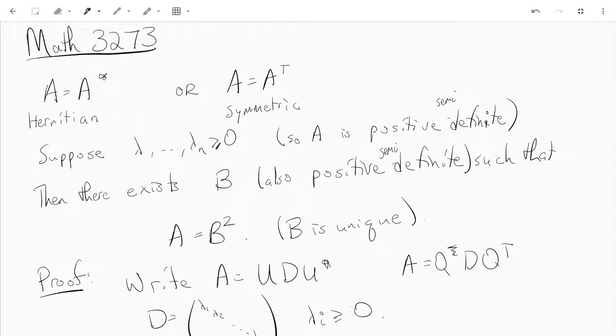So here we have a Hermitian matrix if it has complex entries, or a symmetric matrix if it has real entries, and suppose that A is a positive semi-definite matrix.